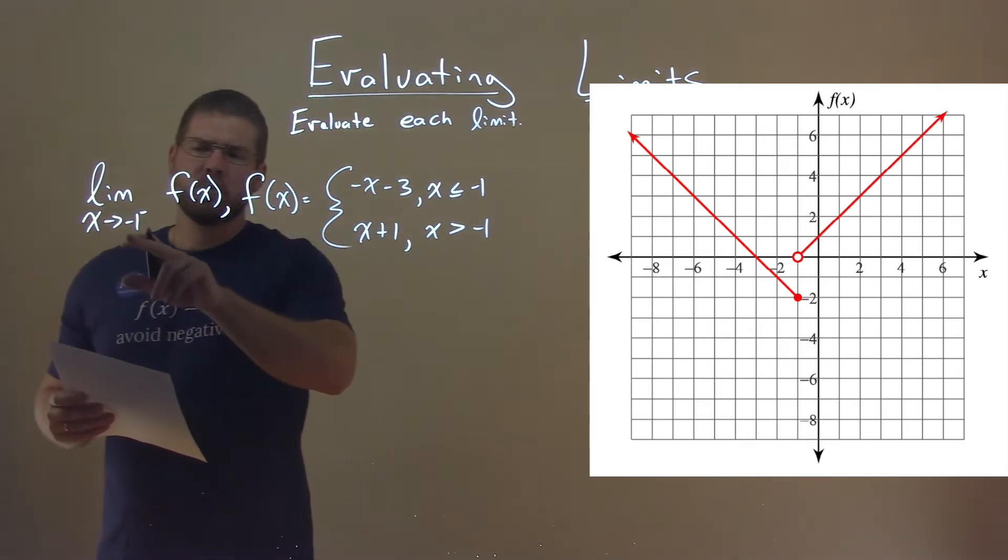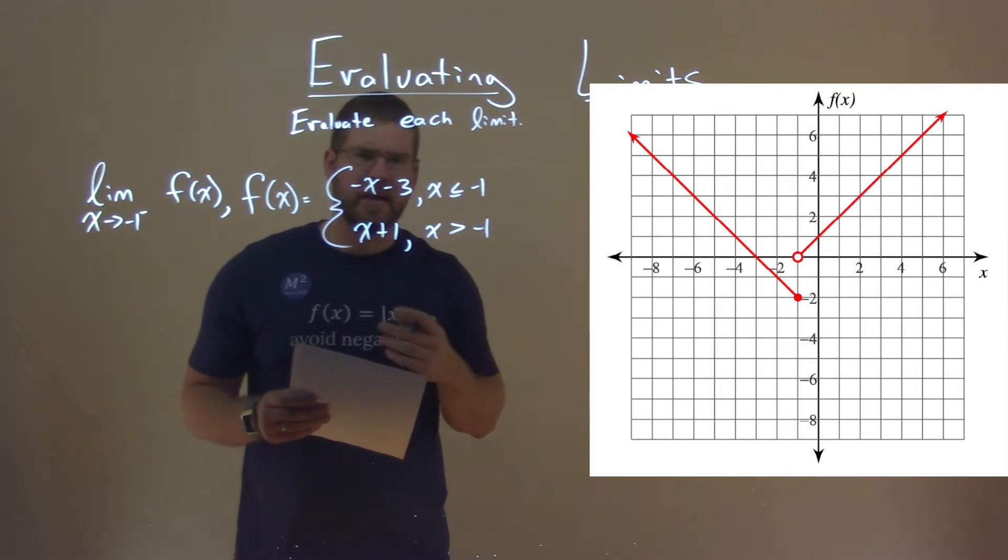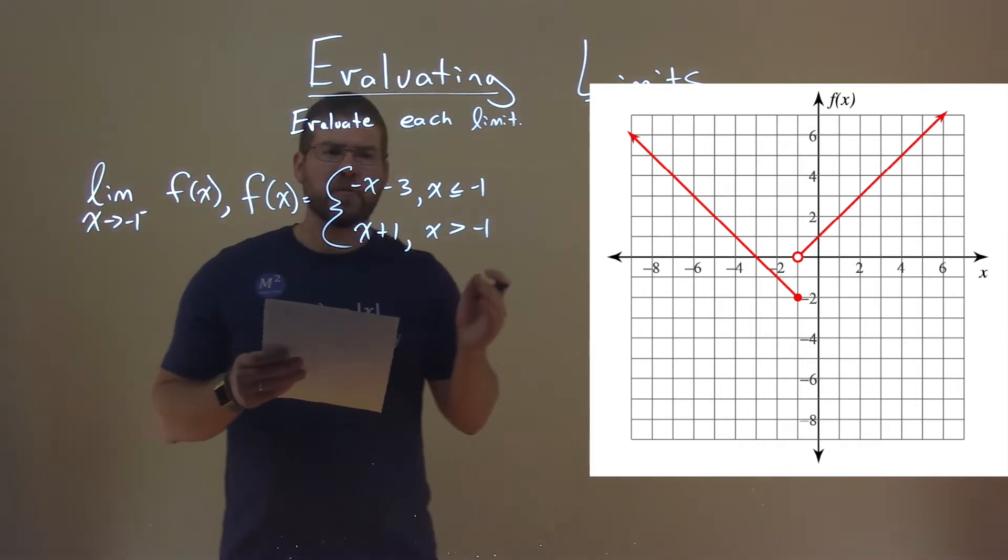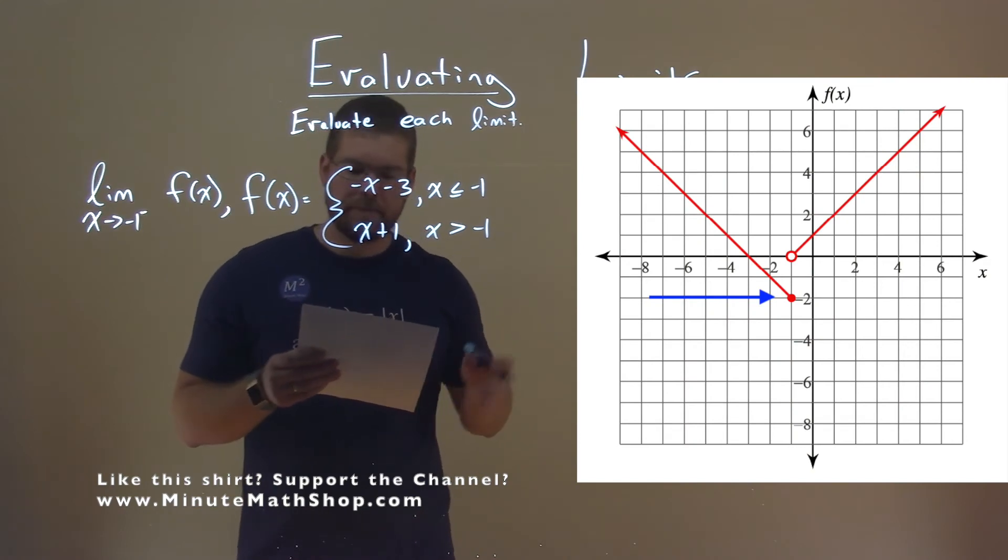We have the approach where x approaches negative 1 from the left, because you see the jump is happening here when x is negative 1. When we approach from the left, we're using the top equation right here, and where is it approaching?